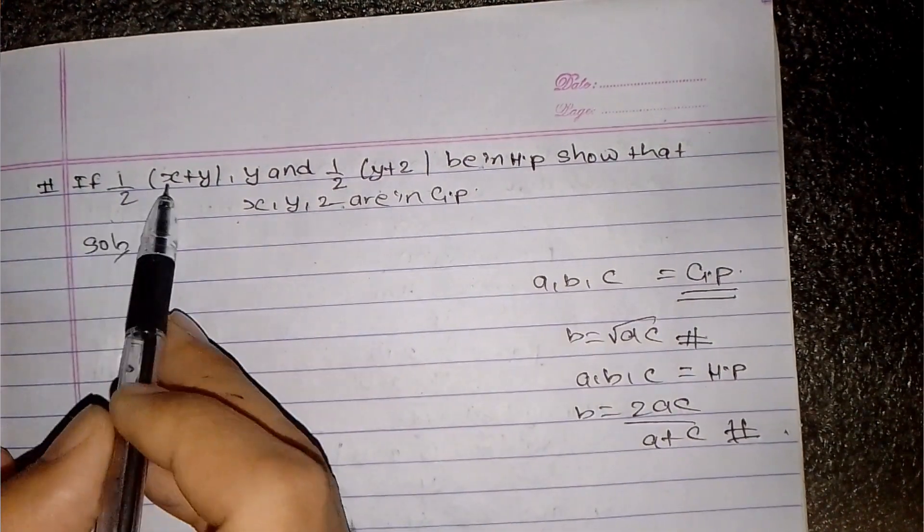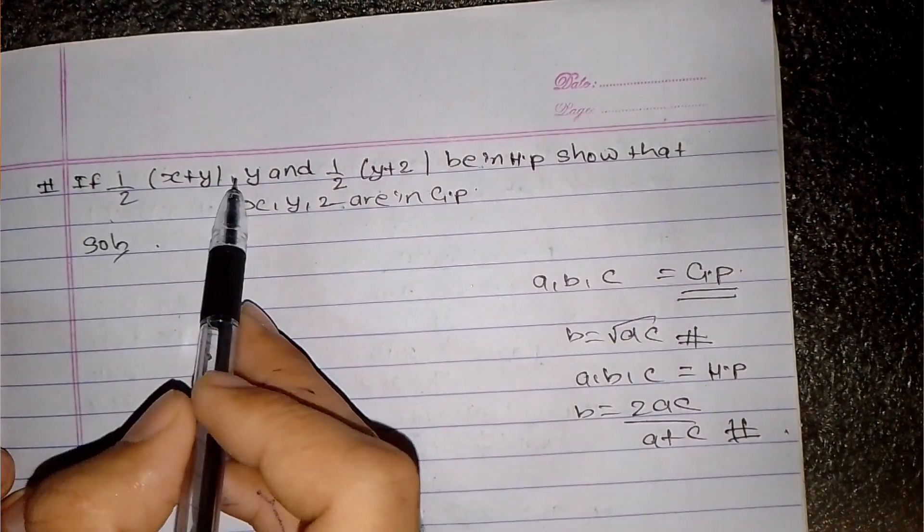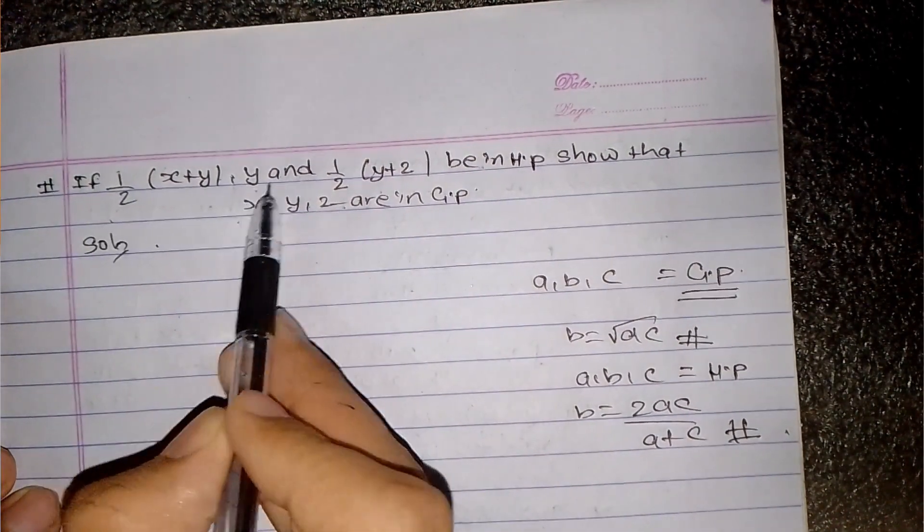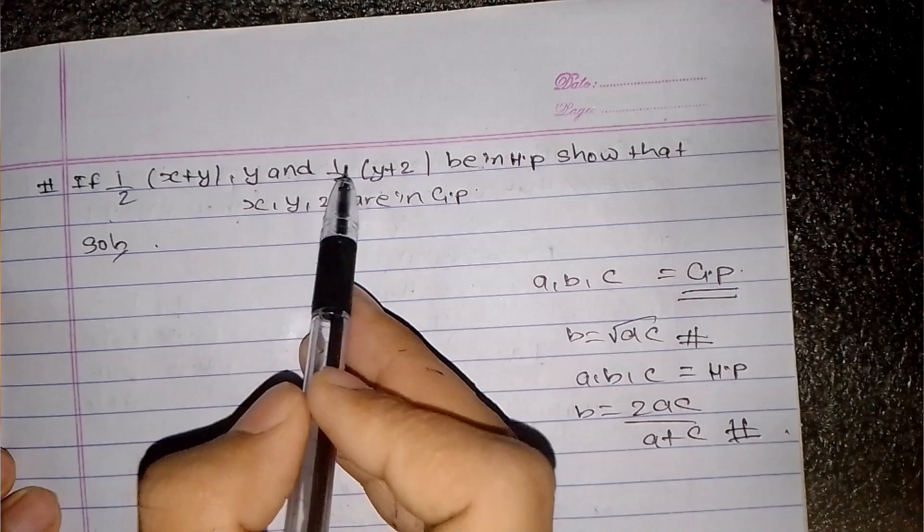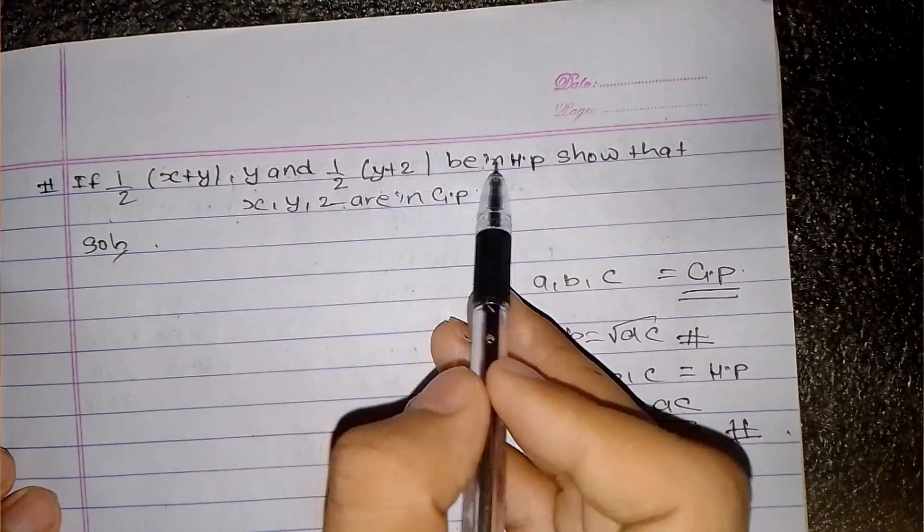If 1/(2x+y) and 1/(2y+z) be in AP, so that x, y, z are in GP.